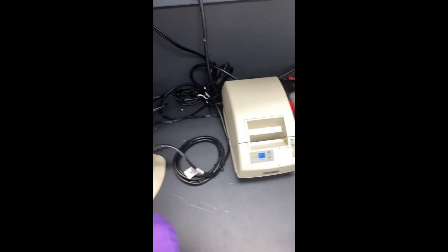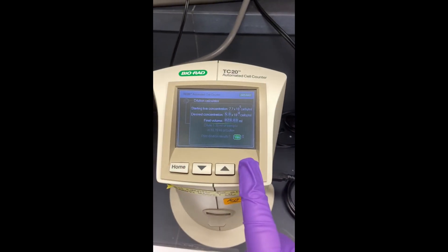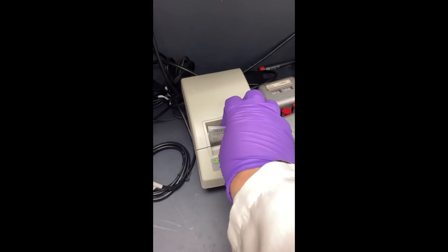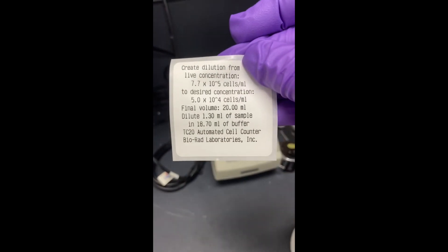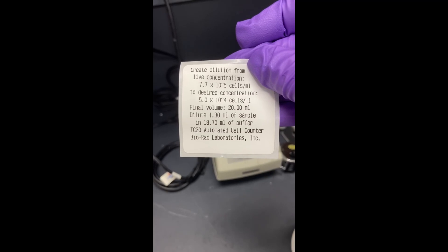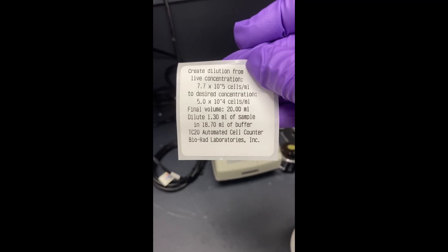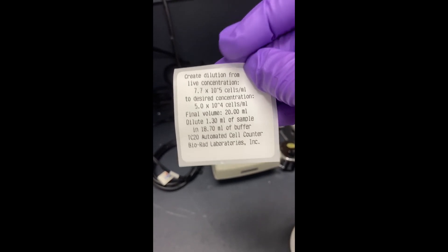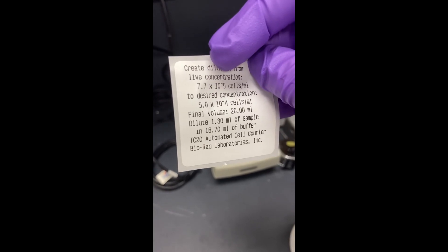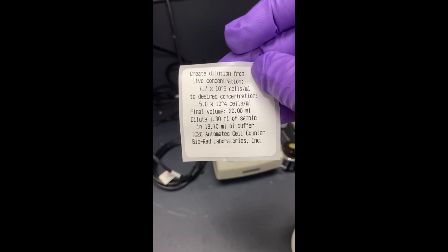And we do have a printer hooked up to this instrument. So it actually is really nice for record keeping to print out your dilution so you know how much you put in, if there's ever a question in your calculations or whatnot. And this is on a little sticky thing so you can stick it right in your notebook.